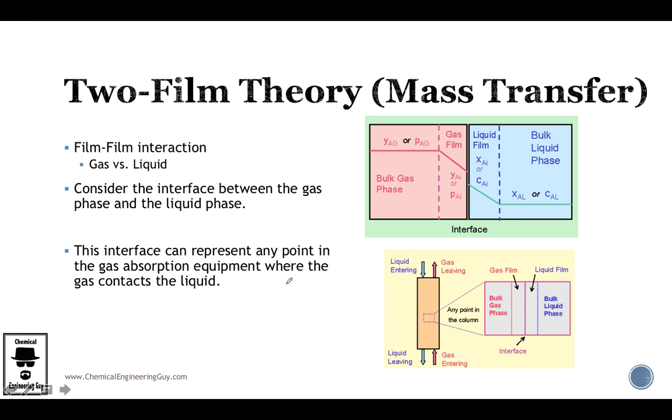This interface can represent any point in the gas absorption equipment where the gas contacts the liquid. So later on we're going to see how absorption columns work. But essentially you can do this model as the example previously stated for the glass. You can do it from the top, the middle, maybe almost at the end or even at the end. So the film interaction is the same. You have a liquid and you have a gas and there is one interaction point.